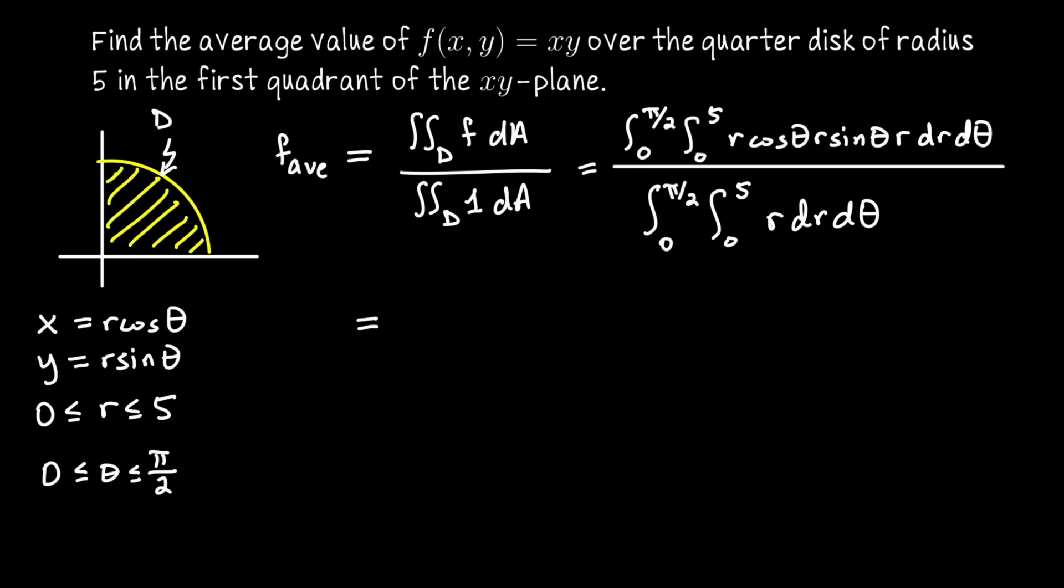For that integral in the numerator, notice that the bounds on r and theta are constant. And if you look at the integrand, it can be factored into a function of r times a function of theta. This next simplification I'm going to do is optional. You could integrate this in the usual way: first anti-differentiate with respect to r, evaluate on the bounds, then anti-differentiate with respect to theta.